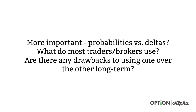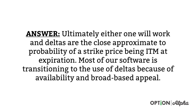What do I use? What do most traders or brokers use? Or are there any advantages or drawbacks over using one versus the other long term? The answer is that ultimately either one will work, and deltas are the close approximate to the probability of a strike price being in the money at expiration.